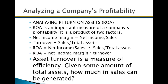If the net income margin increases or the turnover rate increases, then the return on assets should increase because it's a multiplication. So if you want return on assets to increase, you know you've got to increase sales, which will help increase the return on total assets. Or you have to increase net income — increasing net income or sales will help.